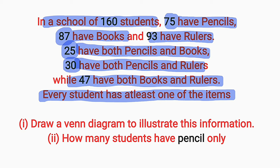Question 1: we are asked to draw a Venn diagram to illustrate this information, while the second question asks us to find the number of students that have pencil only.